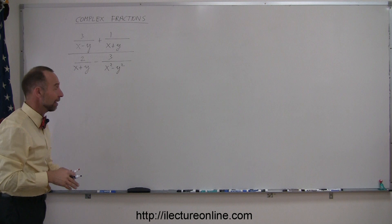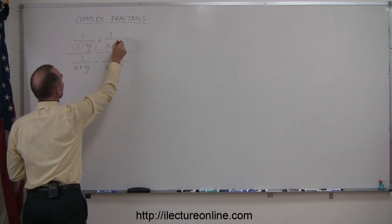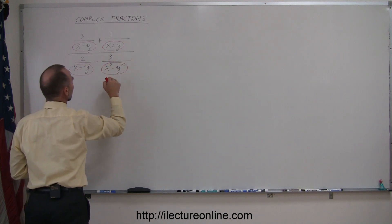Each of those, of course, have denominators, so I like to circle those. Here's the x minus y, the x plus y, x plus y, and here we have x squared minus y squared.